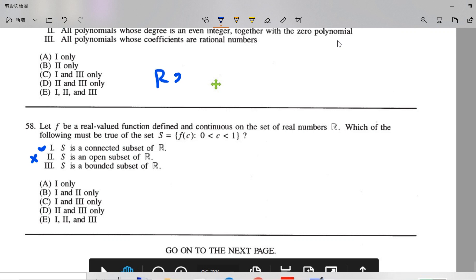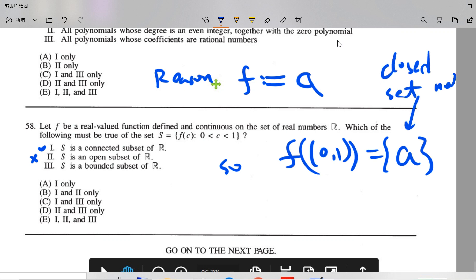And the reason is f can be chosen to be constant. So let's say a. So f of (0,1) is just a constant a, which is a closed set, not open.